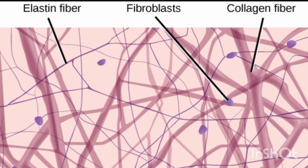Out of the fibrous elements, the collagen fibres are the most prominent, but elastic fibres are also present. Reticular fibres are scarce, but they tend to increase in number at places where the loose connective tissue borders upon other structures.